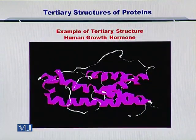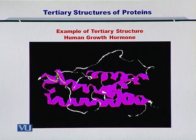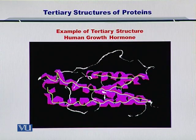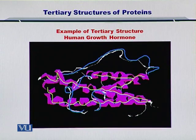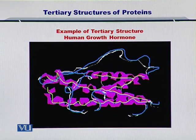Let's take an example. This is the human growth hormone. In this figure, you can see the pink colored alpha helices, which have been brought together by this coil, this loop, another loop, and here as well.